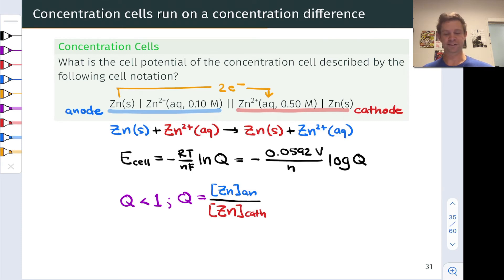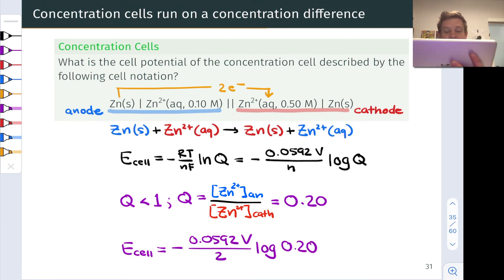We need the value of Q—we're going to plug that into the Nernst equation. Keep in mind, in a functioning concentration cell, the value of Q is less than 1. Q is less than K. This is what causes the reaction to go forward. The value of Q is going to correspond to the molarity of zinc 2+ in the anode divided by the molarity of zinc 2+ in the cathode, and this comes out to 0.2—0.1 divided by 0.5. We plug that into the Nernst equation in black above, and we arrive at an Ecell value of 0.021 volts. It's about 21 millivolts.